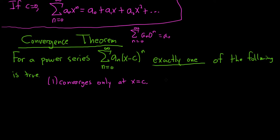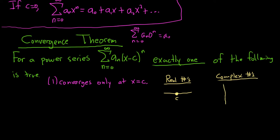Let's look at the picture for what this looks like. In the real case, which is what we have in calculus, it converges at a single number c. If you look at complex numbers — extra knowledge — in the complex plane it would look like a point. A complex number can be written as a plus bi, and you can think of it as an ordered pair a comma b in the plane. So it's just a point.